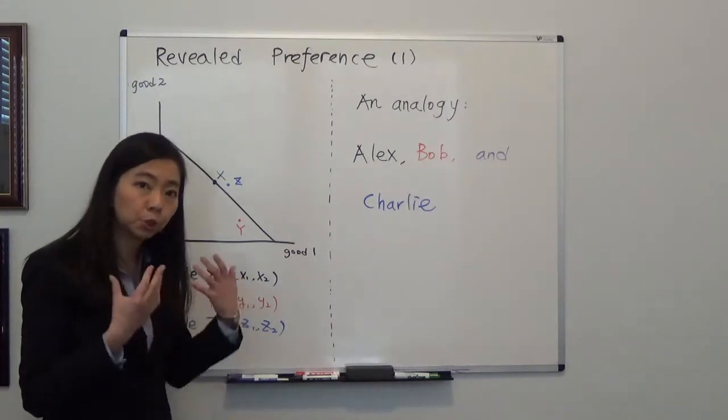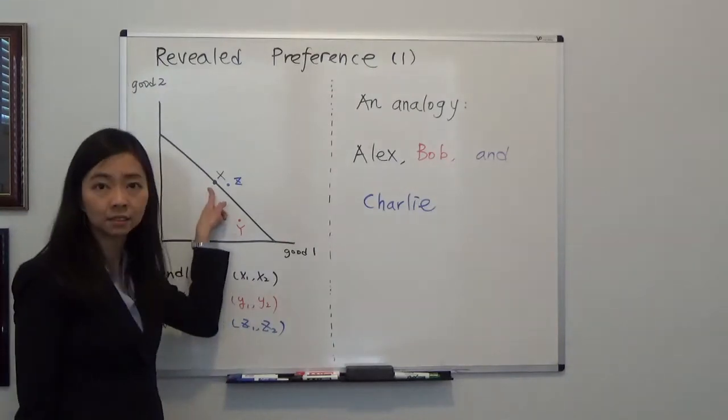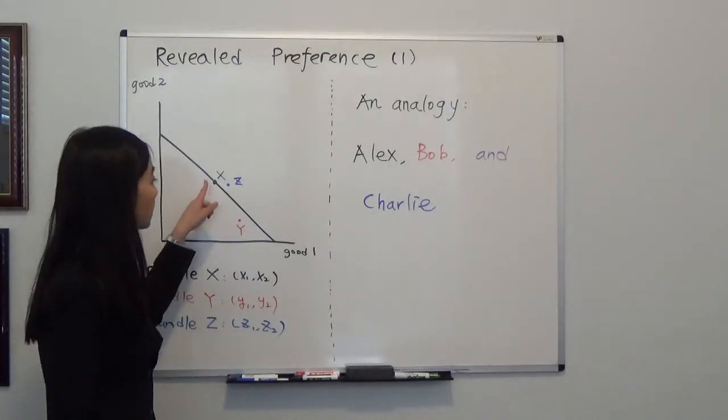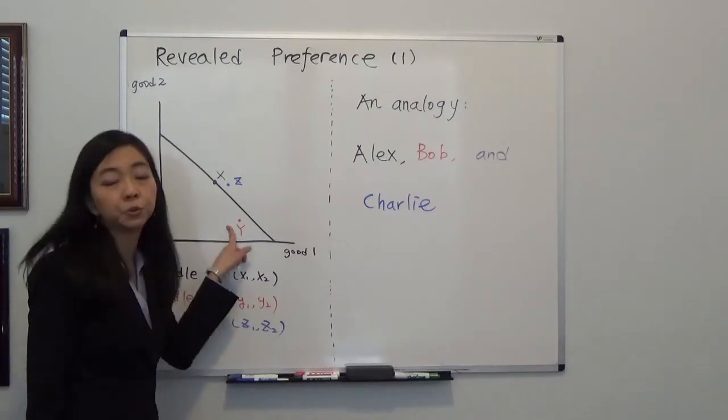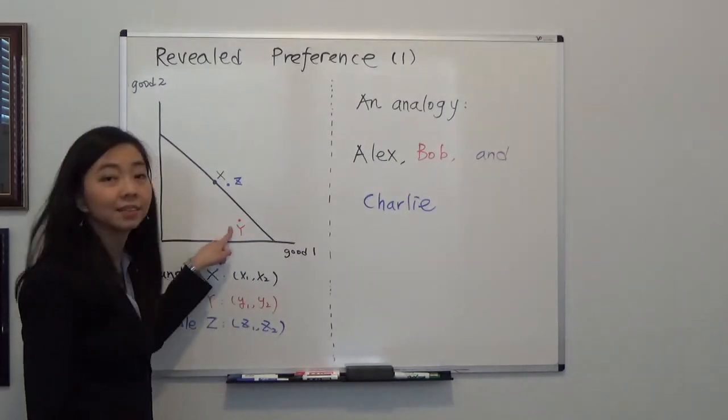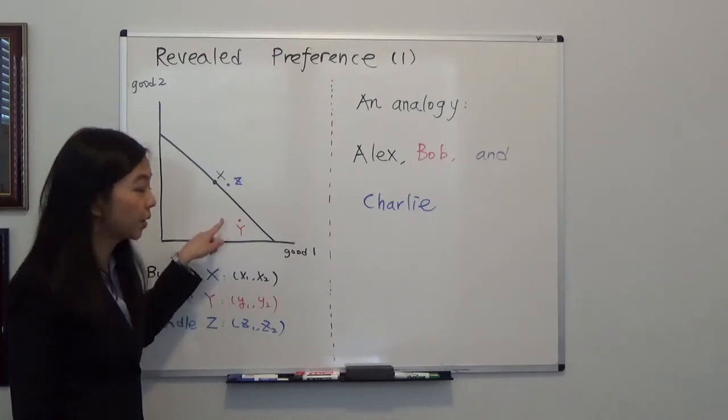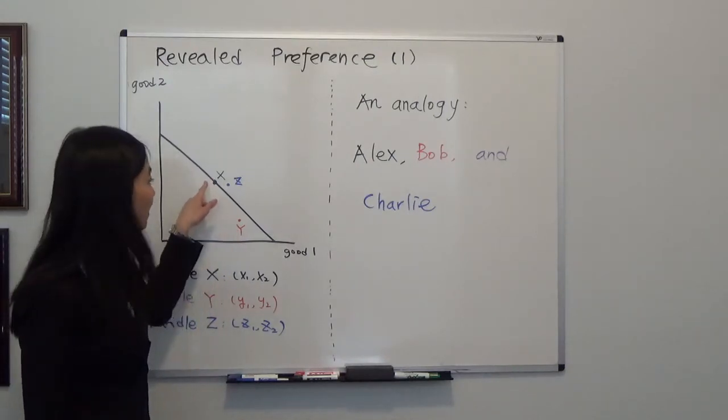And suppose you end up choosing bundle X. Then we say that bundle X is revealed preferred to bundle Y because they are both available. Y is affordable, but you end up not choosing Y, you're choosing X.